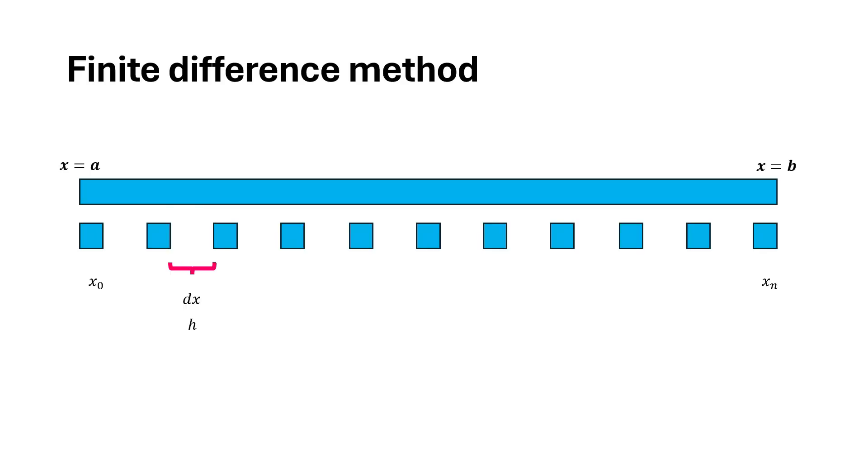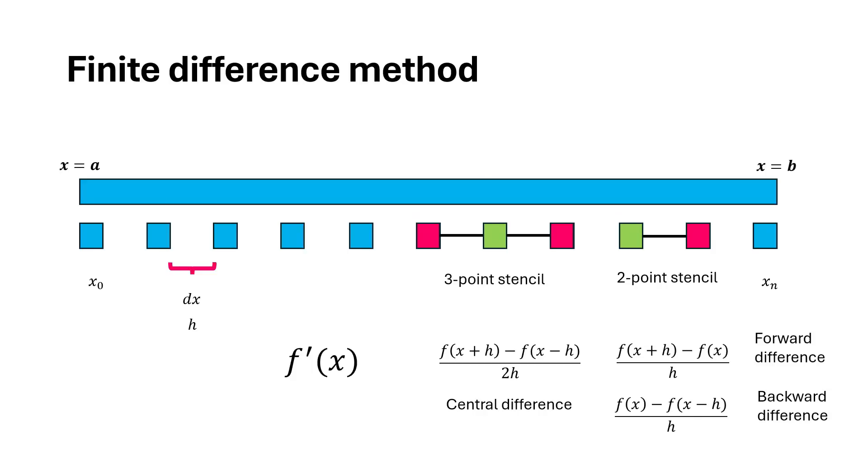For example, a three-point stencil looks like this whereas a two-point stencil might look like this. And if we want to approximate the first derivative with finite differences, an example of three-point stencil will be a central difference whereas examples of two-point stencils are forward and backward differences.